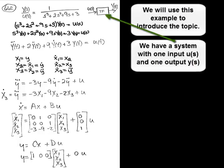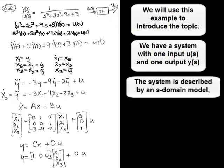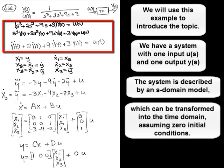We have a system with one input U and one output Y. The system is described by an S-domain model, which can be transformed into the time domain assuming zero initial conditions.